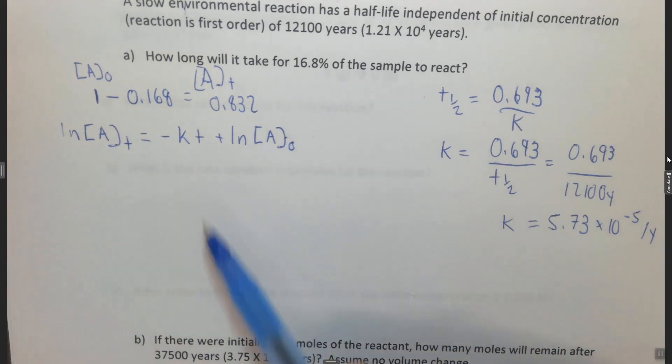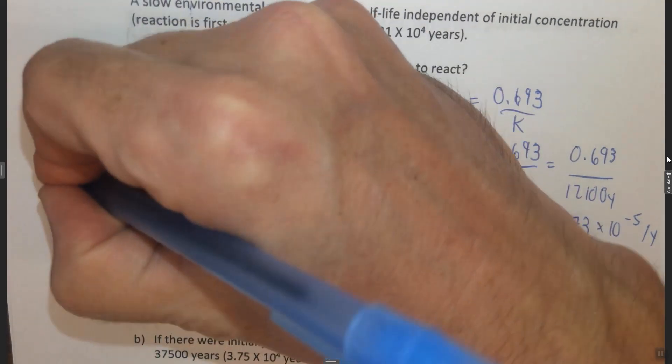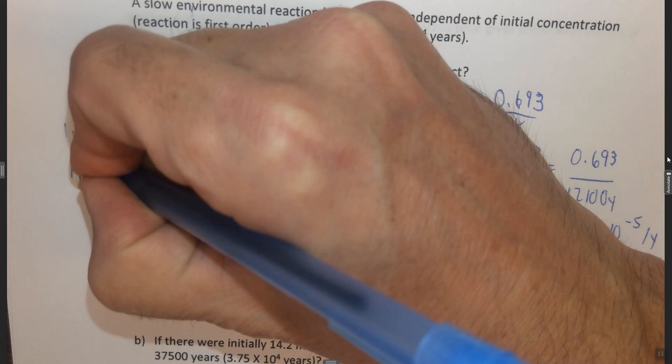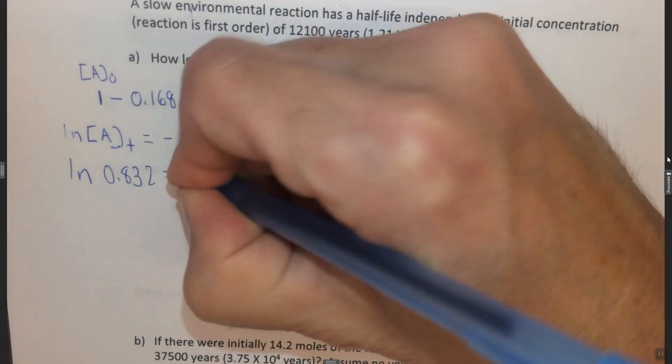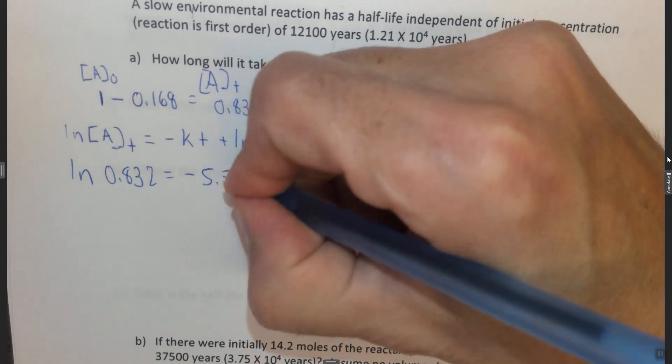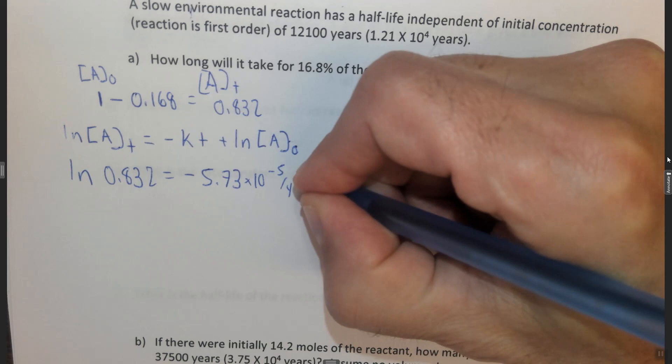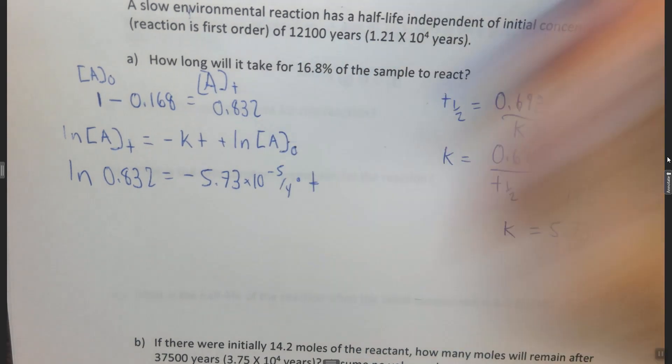We now have everything we need to solve this equation. So the ln of A at some t, the ln of 0.832, equals negative K, 5.73 times 10 to the minus 5 per year, times T, T is our variable,